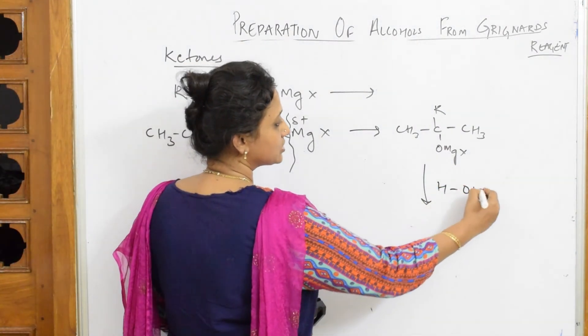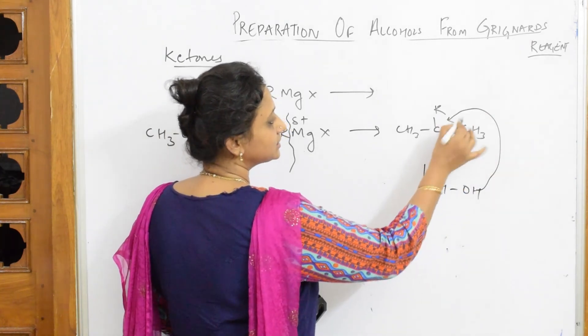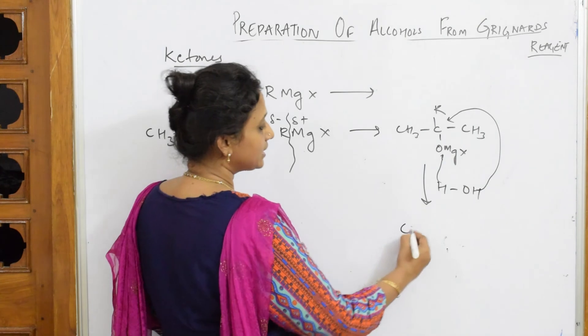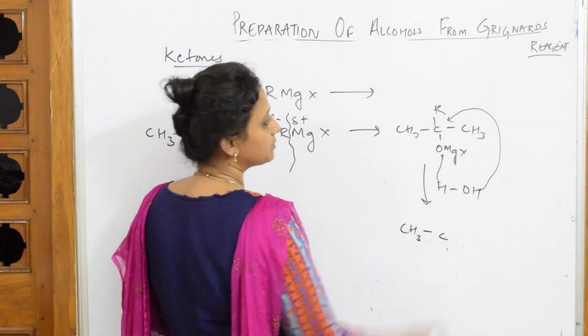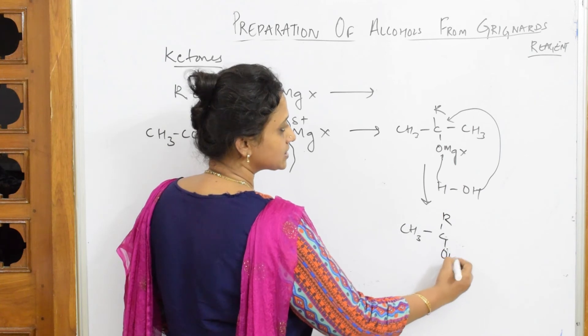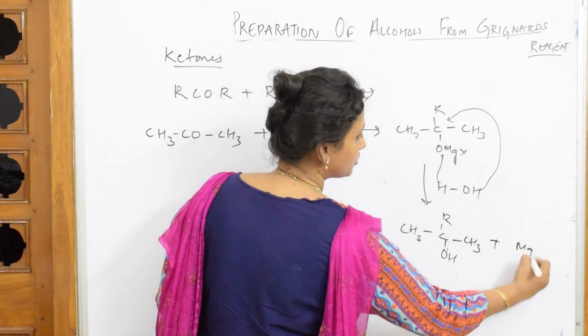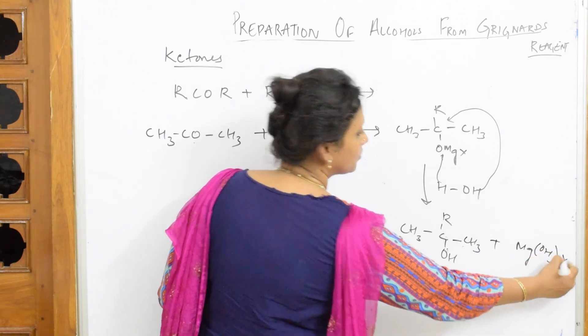So you get CH3COMgX plus this. This is here and your alkyl group is also there. Now this on further hydrolysis, H and OH, H goes here and OH comes and attacks this carbon. So what do I get? CH3 carbon, your alkyl group is still there, your OH is still here, your CH3 is there, and MgOHX.